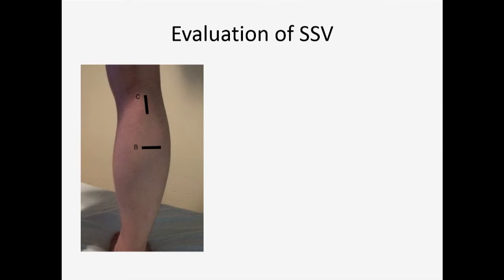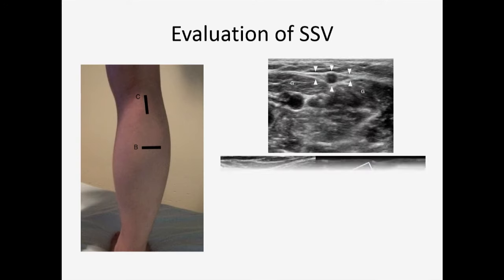We start from the saphenopopliteal junction with a longitudinal view. This is the CTV showing how the small saphenous vein drains into the popliteal vein. Once we find the valve, we come down into the gastrocnemius muscle. This is the gastrocnemius muscle, this is the muscular fascia, and this is where the small saphenous vein is located.